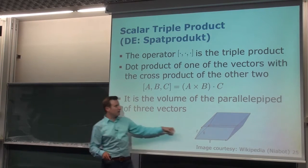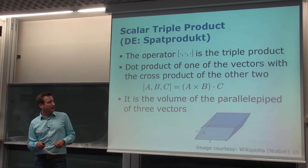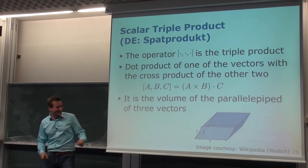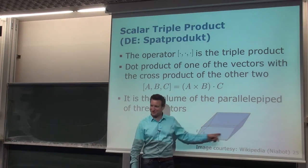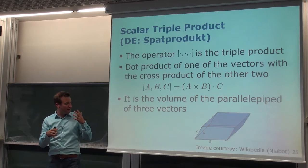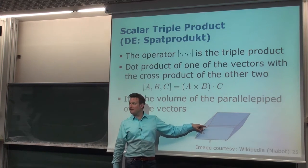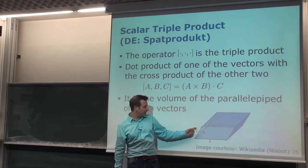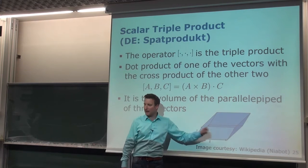The scalar triple product computes the volume of the parallelepiped formed by the three vectors. If this gives a value of zero, it means there is no volume — which is achieved when all three vectors A, B, C lie within a plane.